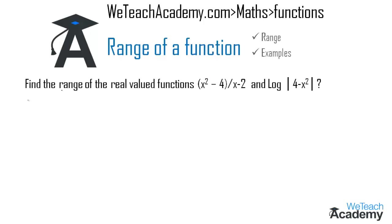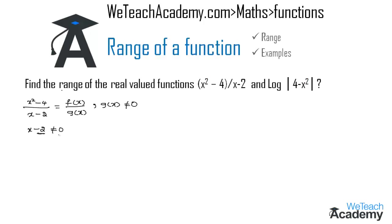To find the range, we first need to find the domain. Consider the function (x² - 4) divided by (x - 2). It is in the form f(x) divided by g(x), which is defined only when g(x) is not equal to zero. So the denominator x minus 2 must not equal zero, which gives us x not equal to 2. Therefore the domain is all real numbers except 2.